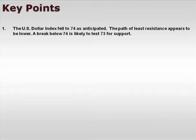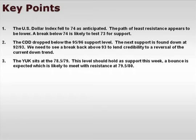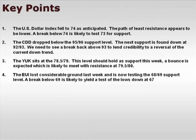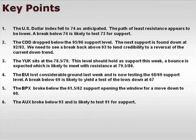Let's take a look at a few of our key points. The U.S. dollar index fell to 74 as anticipated. The path of least resistance appears to be lower; a break below 74 is likely to test 73 for support. The CDD dropped below the 95-96 support level; the next support is found at 92-93, and we need a break back above 93 to lend credibility to a reversal. The YUK sits at the 78.5-79 focal zone and should hold as support this week; a bounce is expected, likely meeting resistance at 79.5-80. The EUI lost considerable ground last week and is now testing the 68-69 support level; a break below 69 is likely to yield a test of the lows at 67. The BPX broke below the 61.5-62 support, opening the window for a move down to 60. The AUX broke below 93 and is likely to test 91 for support.